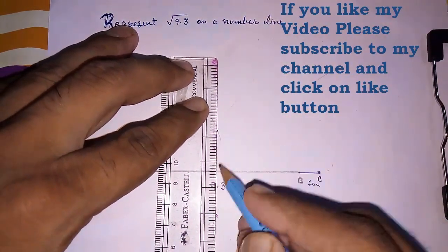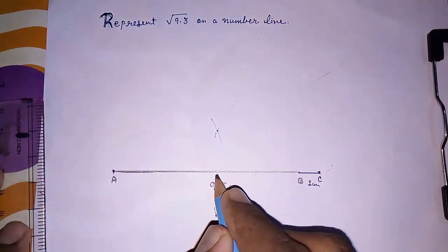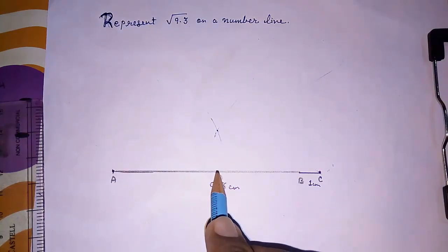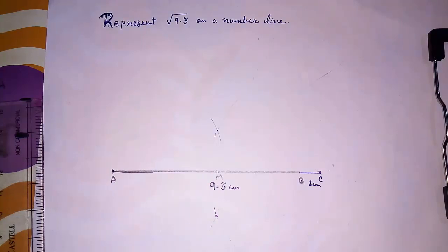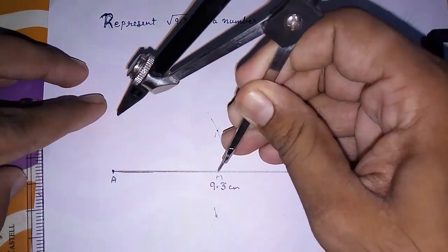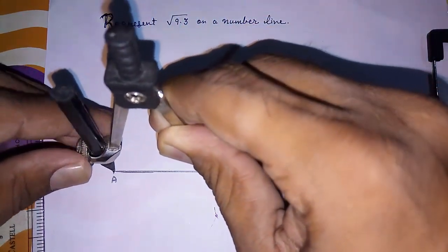Now we are going to draw a circle. Now we have to draw a circle, taking M as the center point and MA as the radius. Now I am drawing it. Look here, taking M as the center point and this MA as the radius.